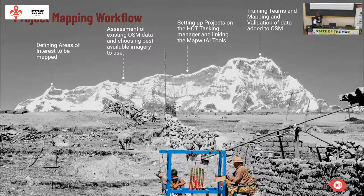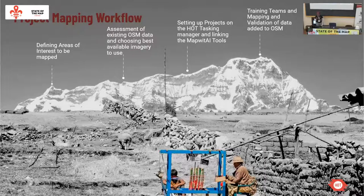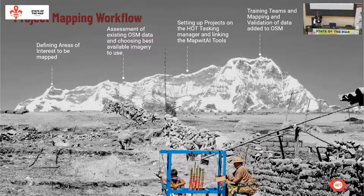We started by first defining areas of interest to be mapped. This is important because of the imagery-for-social-good focus — we really wanted to choose an area that could potentially have a good data use case for the community. From this we also did an assessment of existing OSM data and had to choose the best available imagery. After that, we set up the project in the tasking manager and had several trainings with the mappers we were going to work with. Then we started the mapping in January of this year.